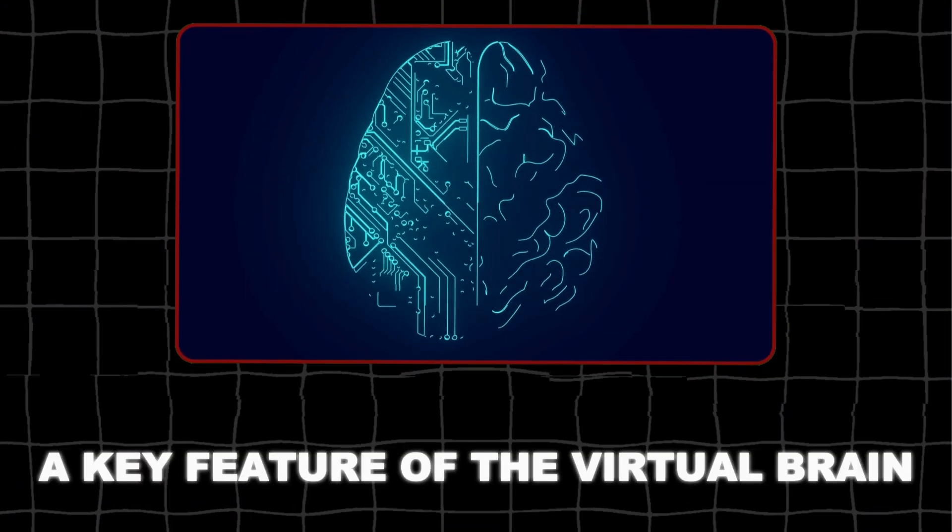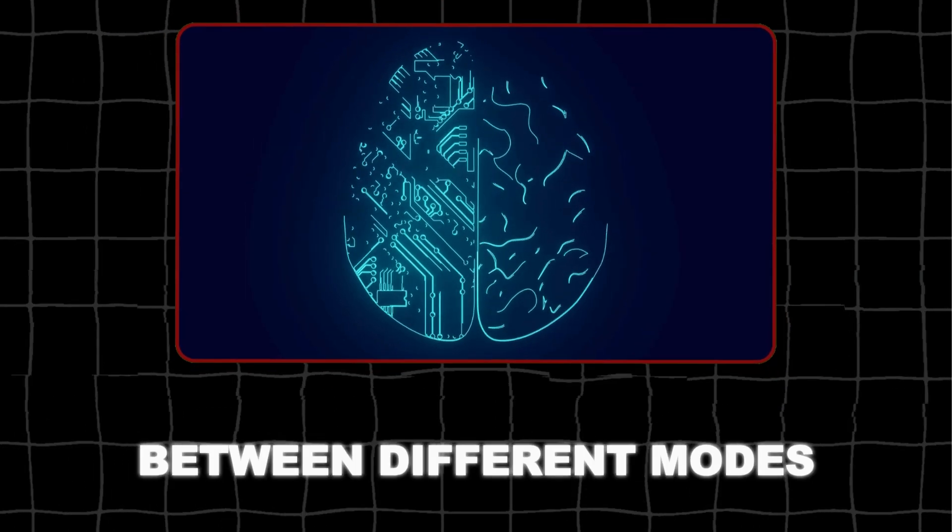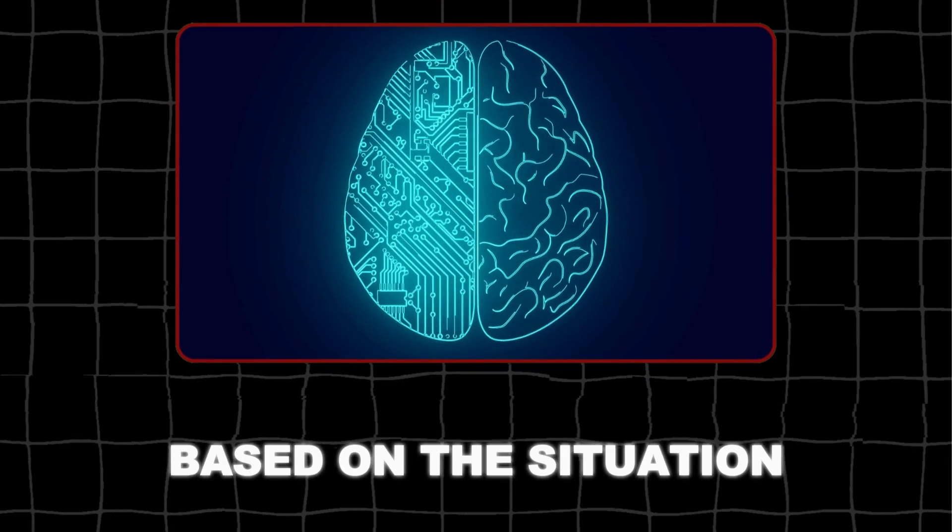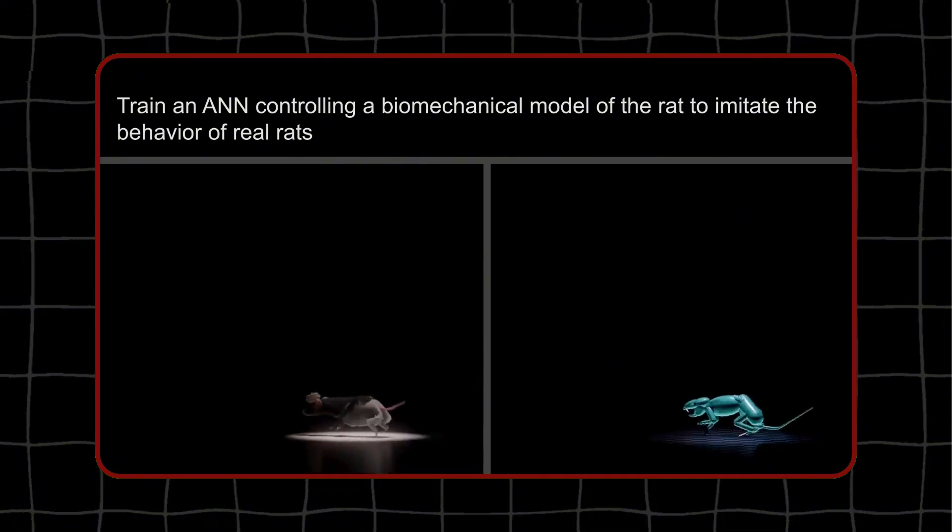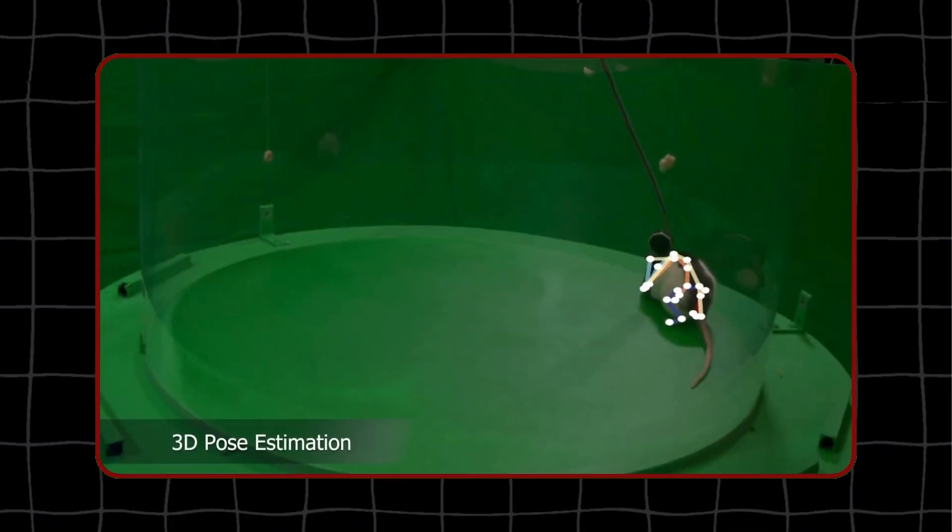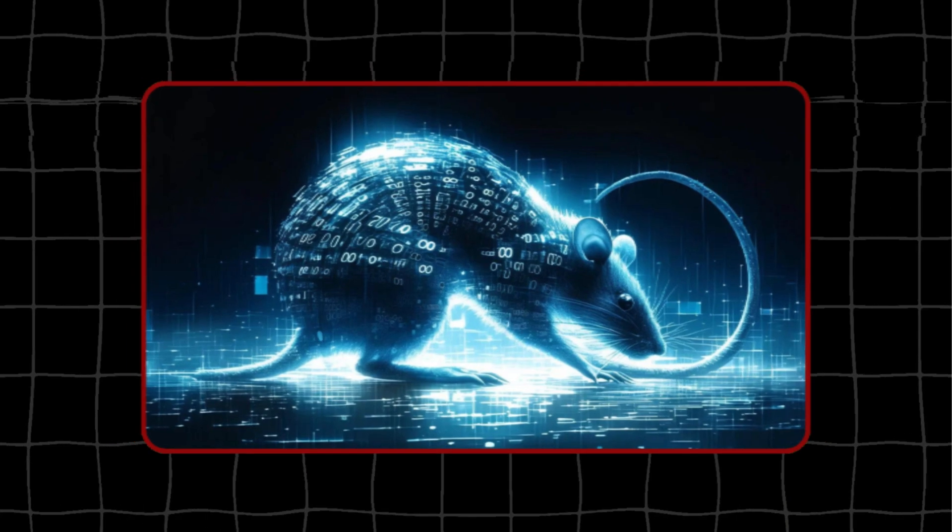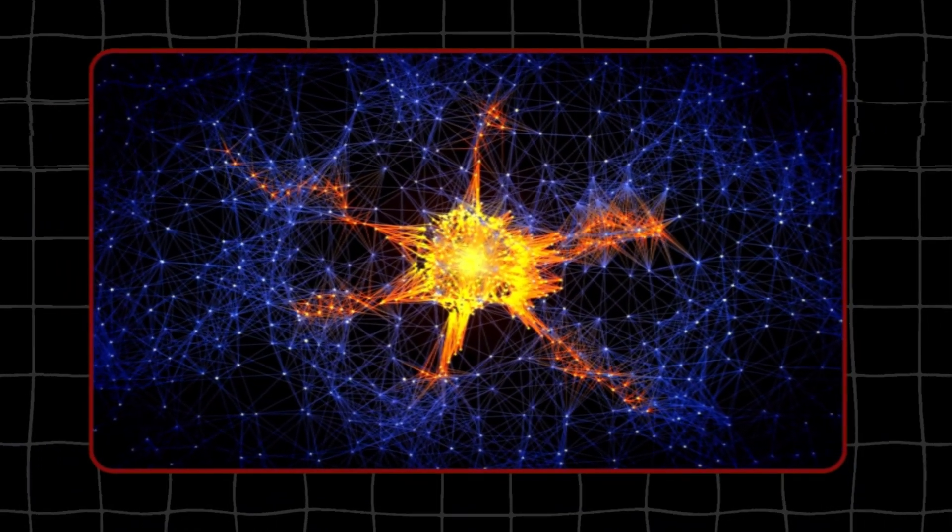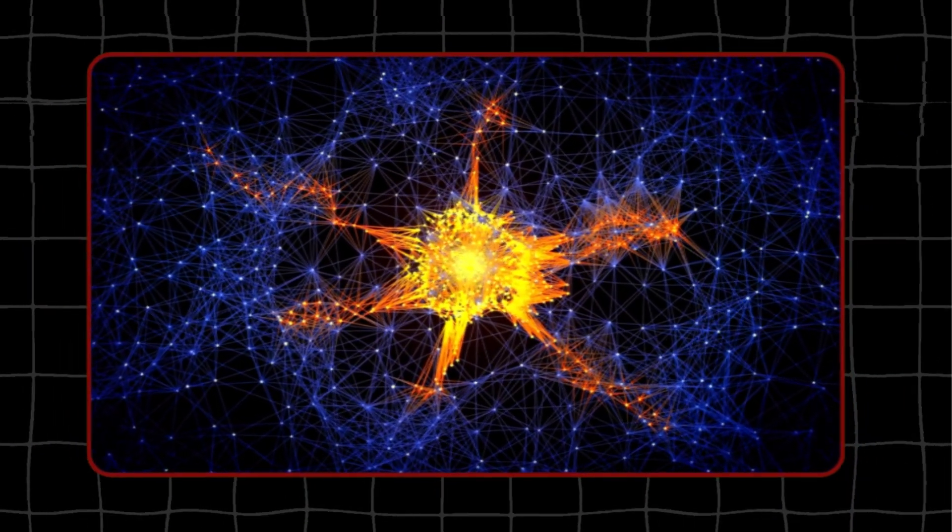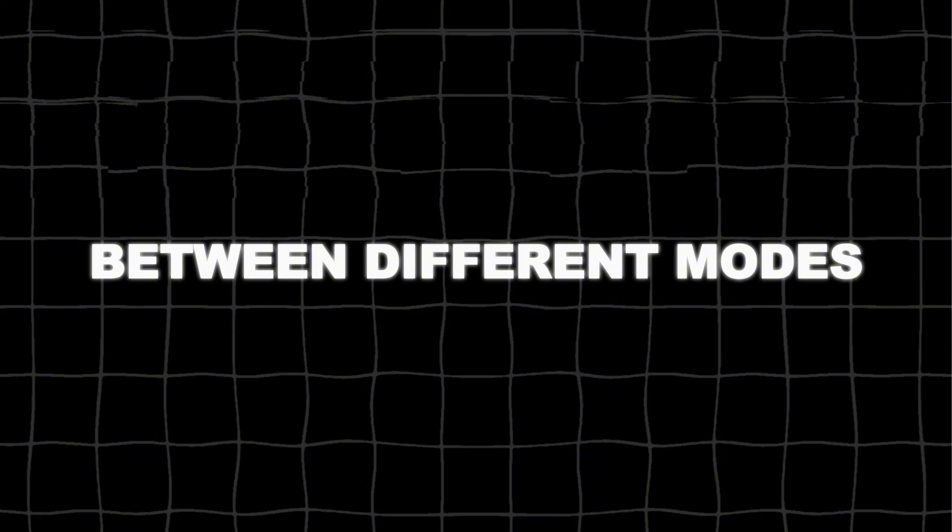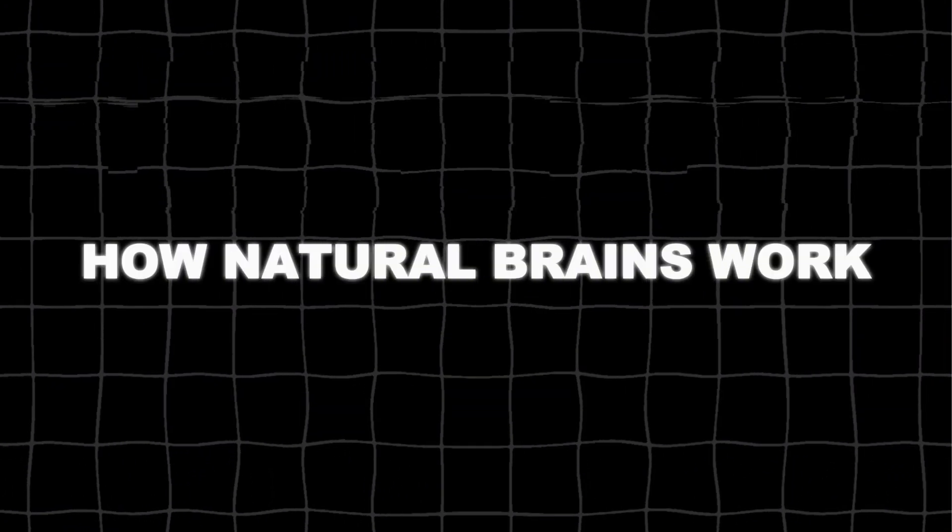A key feature of the virtual brain was its ability to switch between different modes based on the situation. This behavior is very similar to how a real rat's brain changes its activity patterns for different actions. The virtual rat's brain showed this ability, adjusting its neural activity patterns to fit the specific tasks it was doing.